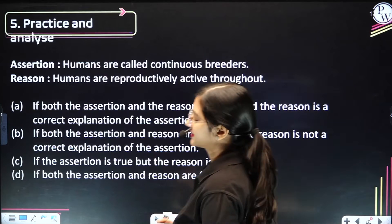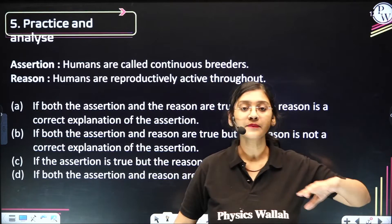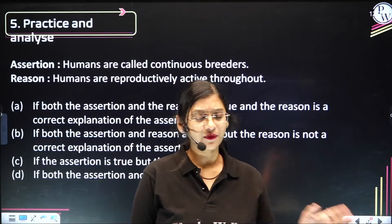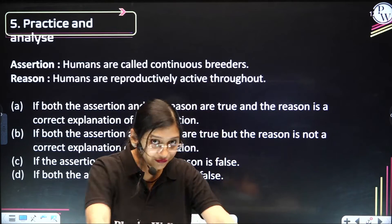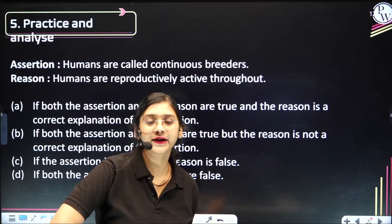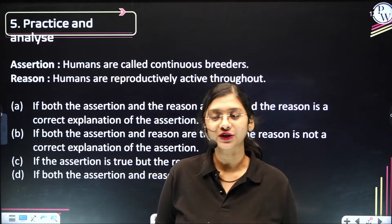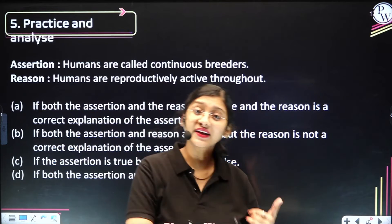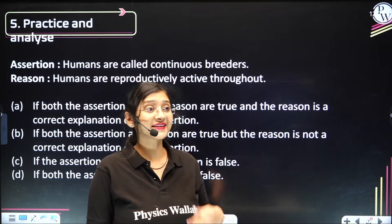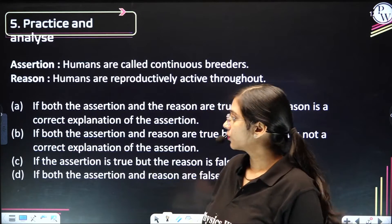The next tip is: definitely practice, practice, practice. When you practice, get around 10 to 20 assertion-reasoning questions, answer them carefully, then check how many you got right and how many you got wrong. Analyze why you went wrong — was it because you didn't know the concept, or because you didn't understand the relationship? That's very important to analyze.